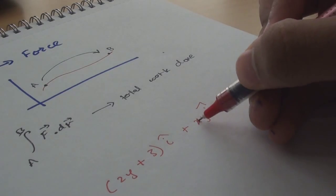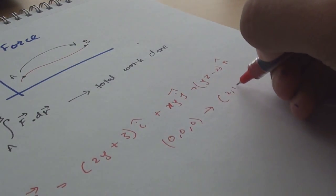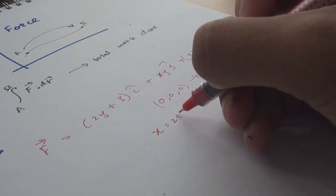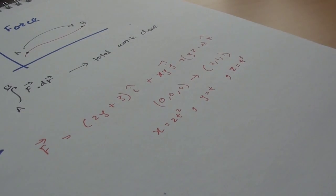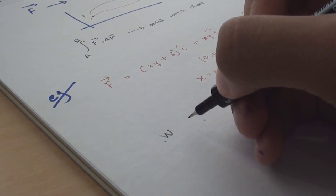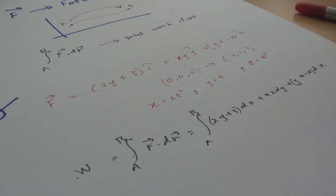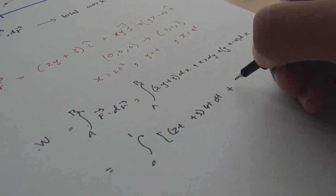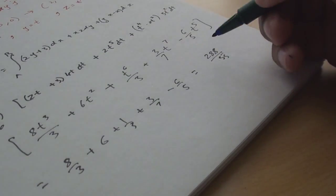Example: compute the work done by the force f when it moves along a particle from the point (0, 0, 0) to (2, 1, 1) along the curve x equals 2t², y equals t, and z equals t³. Therefore work done is the integration of f(r)dr from a to b. Substituting x, y, z, and using these we can also figure out that t ranges from zero to one. Solving, we have the final answer 288 by 35, I think.